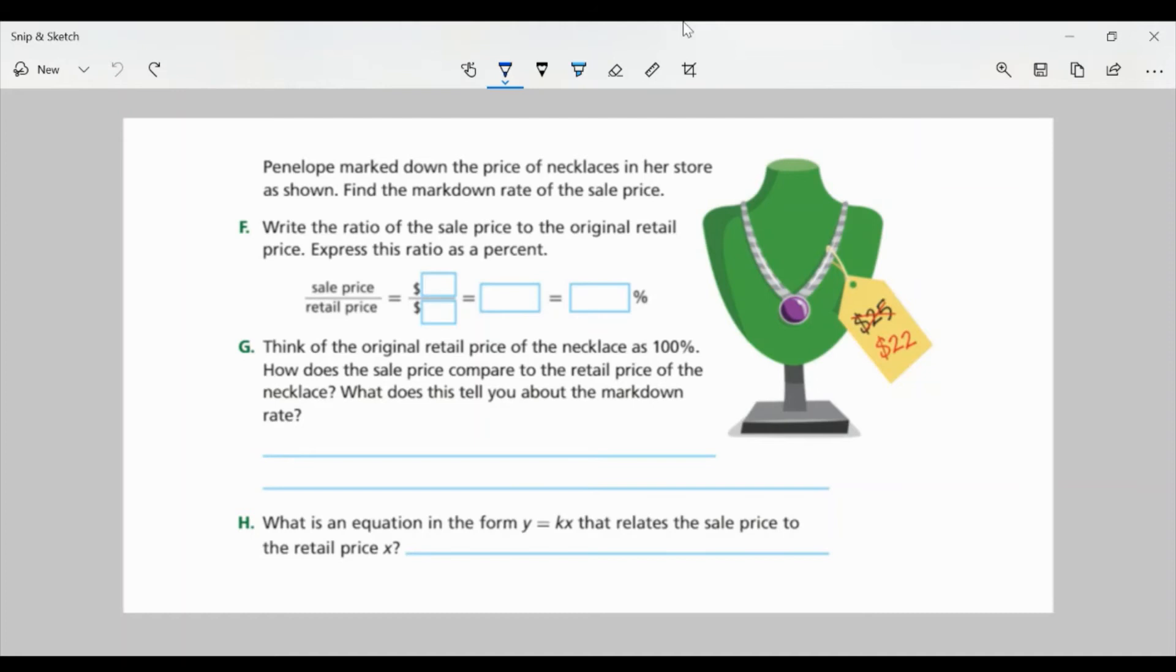So continuing with task two, Penelope marked down the price of necklaces in her store as shown. Find the markdown rate of the sale price. So looking at this price tag here, it was $25, now it's $22. Part F says, write the ratio of the sale price to the original retail price. Express the ratio as a percent. So I want to take the sale price, which was $22, and I'm going to put it over the retail price of $25.